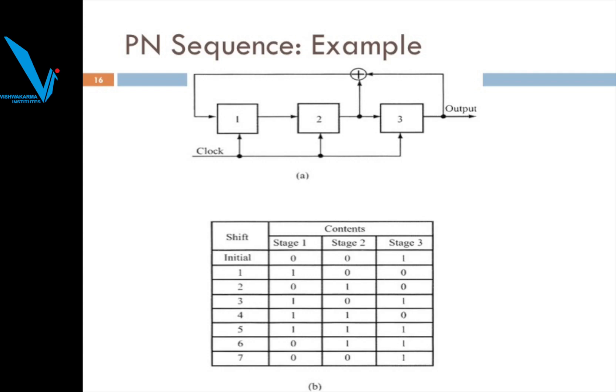The truth table shows the outputs at stages 1, 2, and 3 for each state. During the first state, each flip-flop has a defined output; this continues through 7 states. Since 3 flip-flops are used, the number of states before the sequence repeats is 2^n − 1 = 7. After 7 states, the same output repeats again, but we perceive it as random.